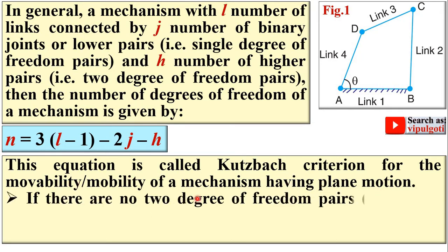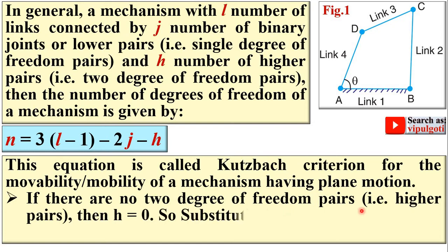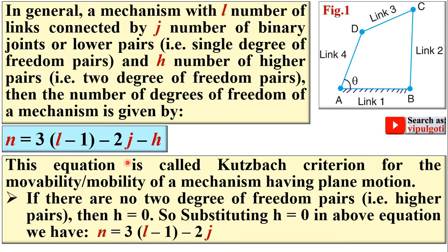If there are no two-degree-of-freedom pairs (i.e., no higher pairs), then H = 0. Substituting H = 0 gives the simplified form: N = 3(L − 1) − 2J. This is the Kutzbach criterion for planar mechanisms having no higher pairs.